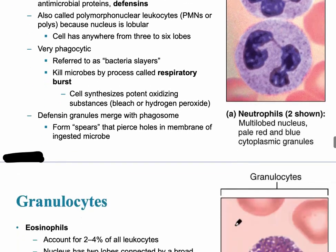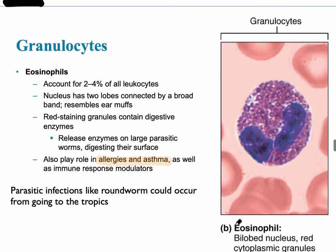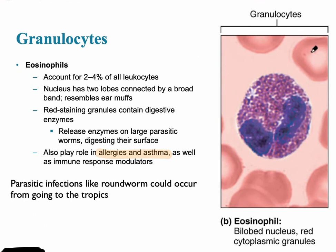Eosinophils usually have much darker granules and two lobes connected by a broad band. They are typically released when there are allergies or asthma, and also during parasitic infections like roundworms. For example, a patient returning from the tropics whose body has been invaded by a roundworm will show a large increase in eosinophils in their blood.